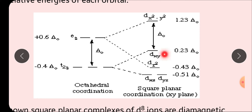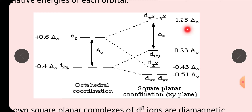तीन energy levels को delta1, delta2, और delta3 से represent करते हैं। DXZ/DYZ में electron आए तो energy = minus 0.51 del O; DZ² में आए तो minus 0.43 del O; DXY में आए तो plus 0.23 del O; और DX²-Y² की energy 1.43 del O — इतनी high कि electrons आसानी से नहीं जाते। Electrons DXY में ही pair हो जाते हैं, DX²-Y² orbital vacant रहता है, जो 4s और 4p orbitals के साथ overlap करके DSP² hybridization से square planar complex बनाता है।